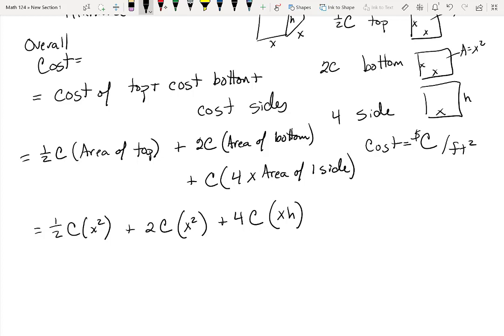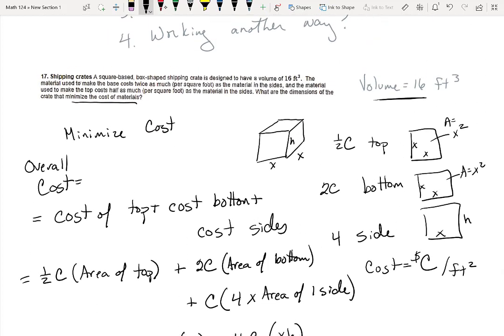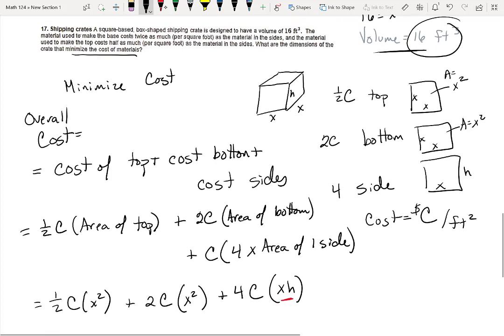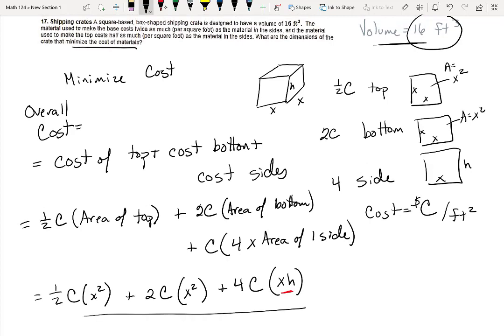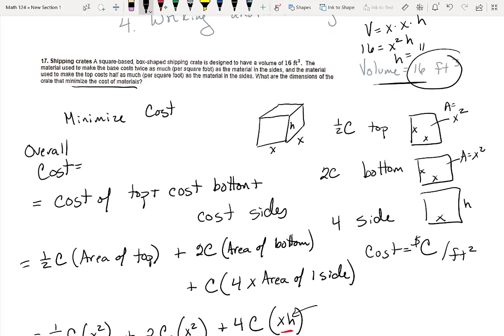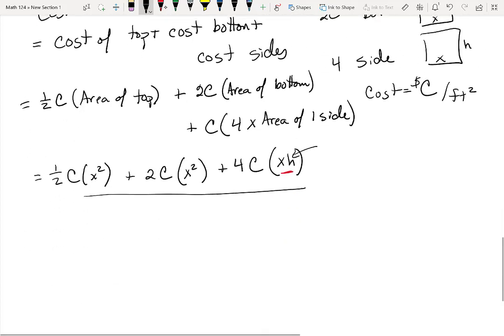Now the problem is here, all of this would be fine except I have this x times h and I would really rather have one variable, and so far I haven't used this constraint yet. So the volume of this box should be x times x times h, length times width times height. And I know that it's 16, so I think maybe I should solve for h as the easiest one. So h is 16 divided by x squared. I'm going to plug that in.